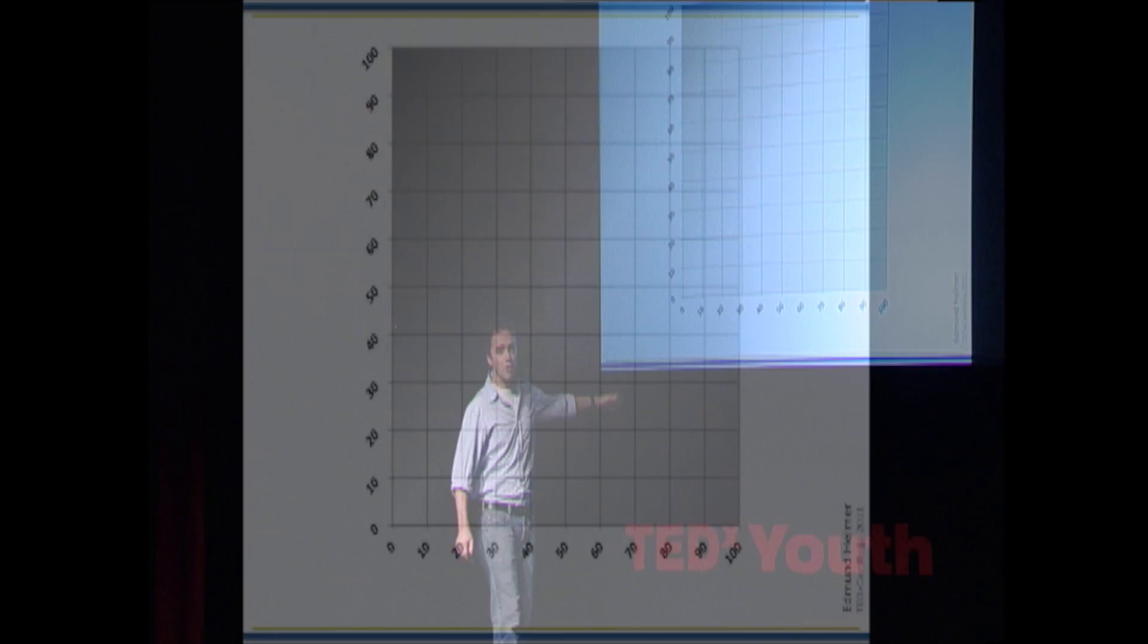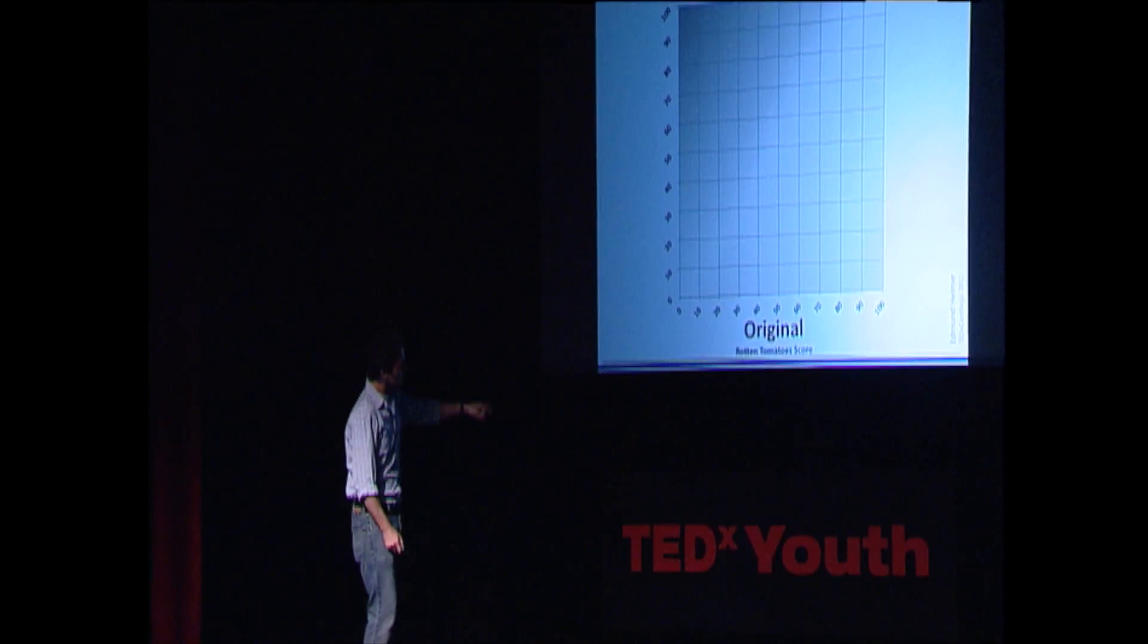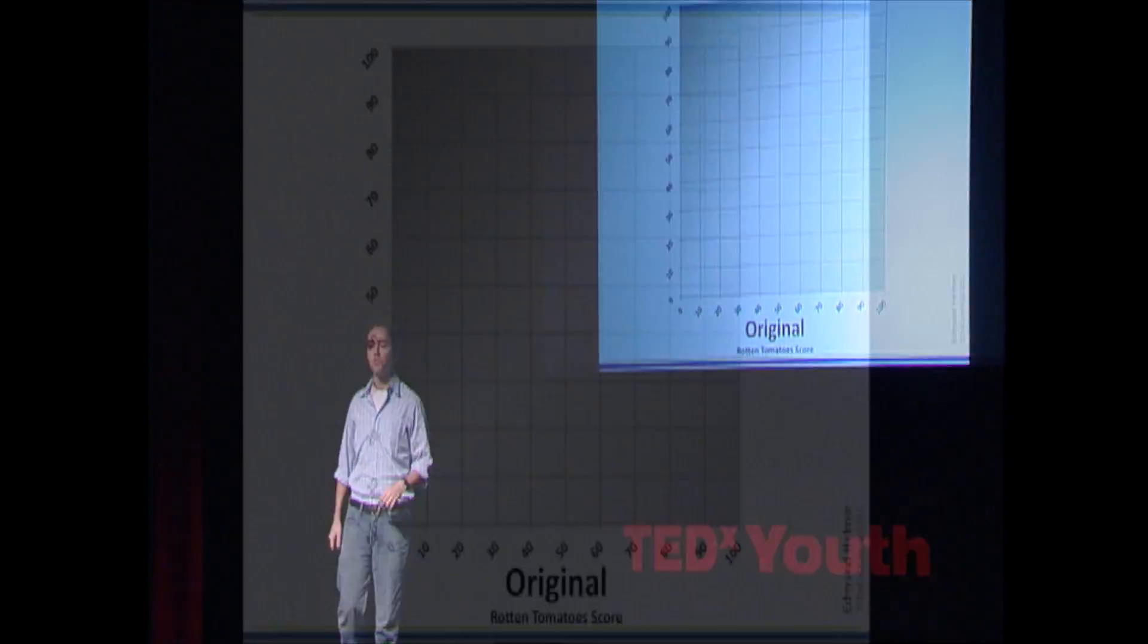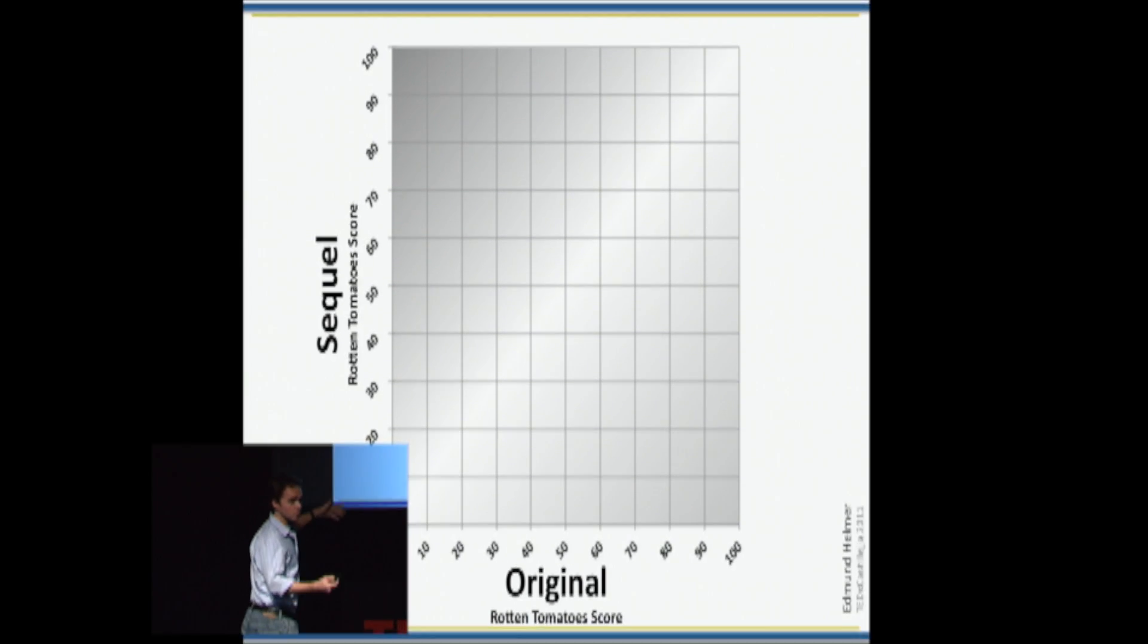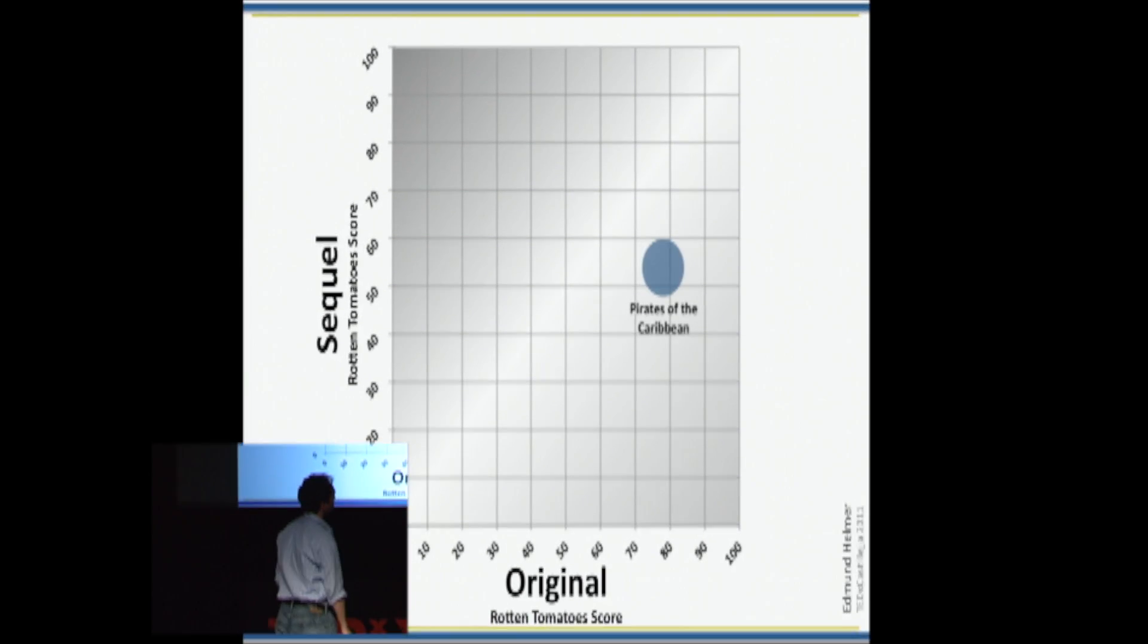So I took Rotten Tomatoes scores of the original, which is the percent of movie critics that liked it. First is the Rotten Tomatoes score of the sequel on the y-axis on the left there. So, for example, I wanted to look at Pirates of the Caribbean.